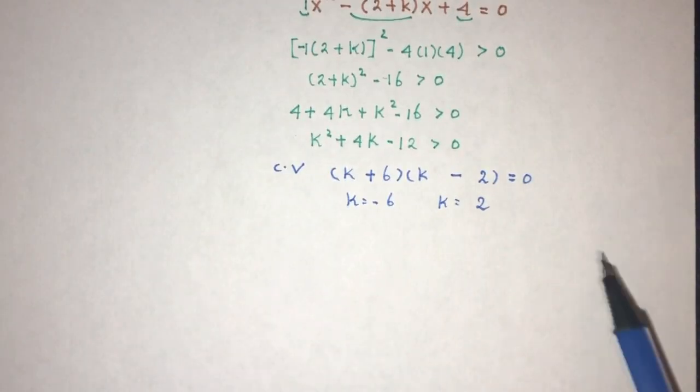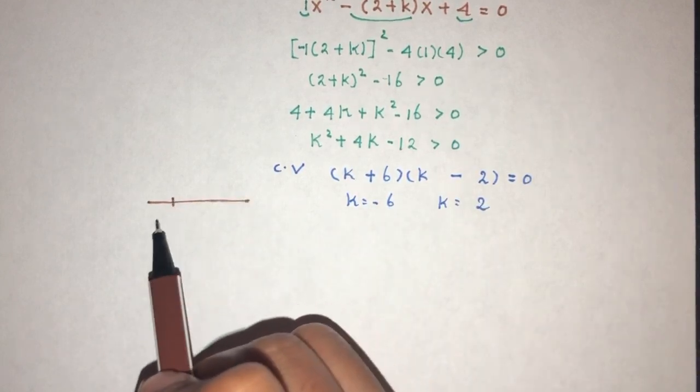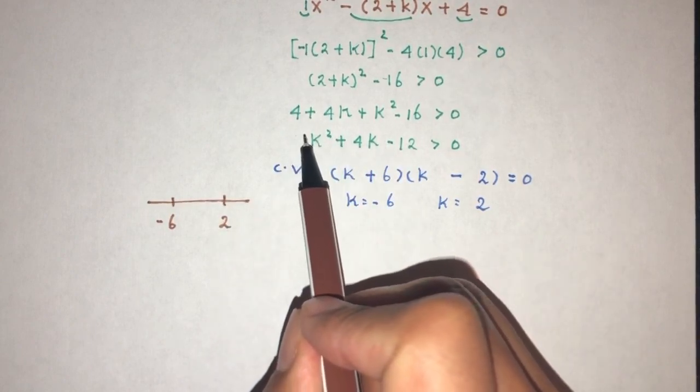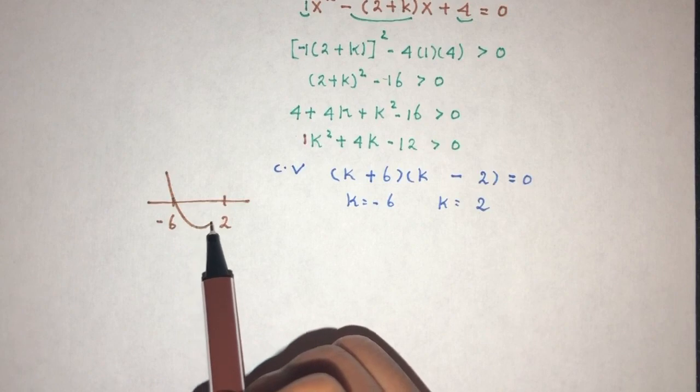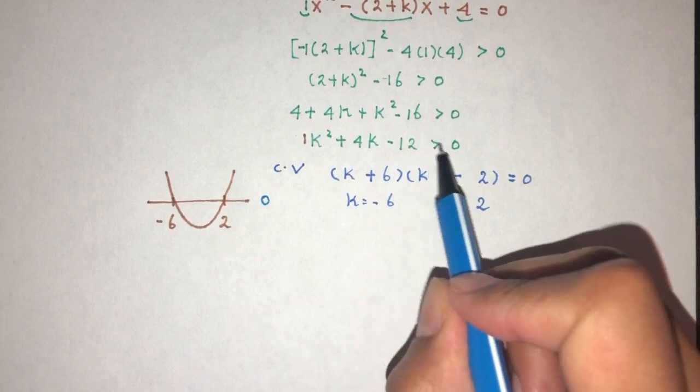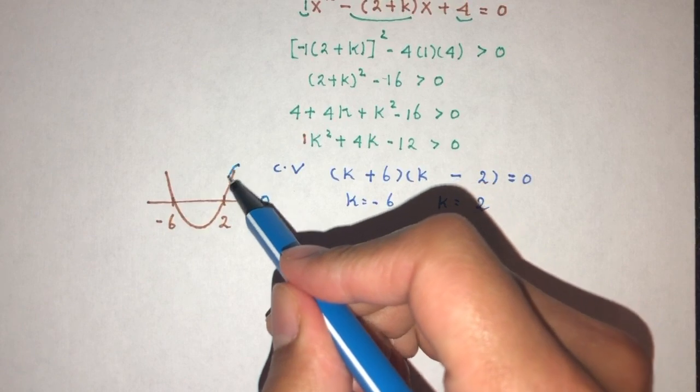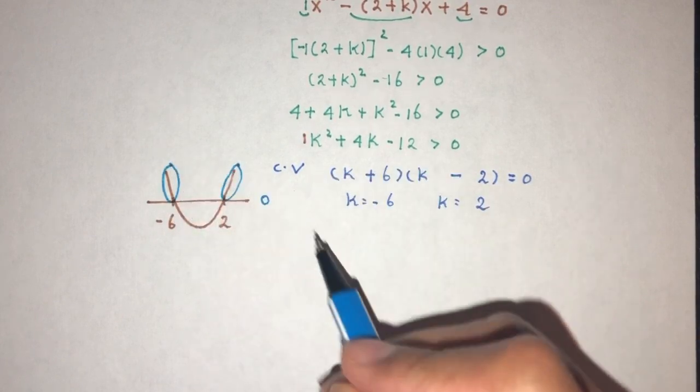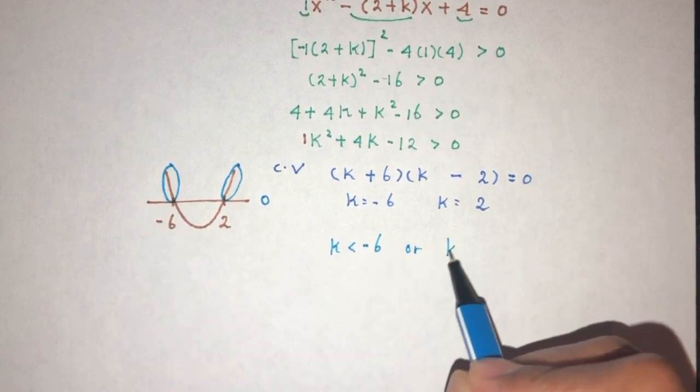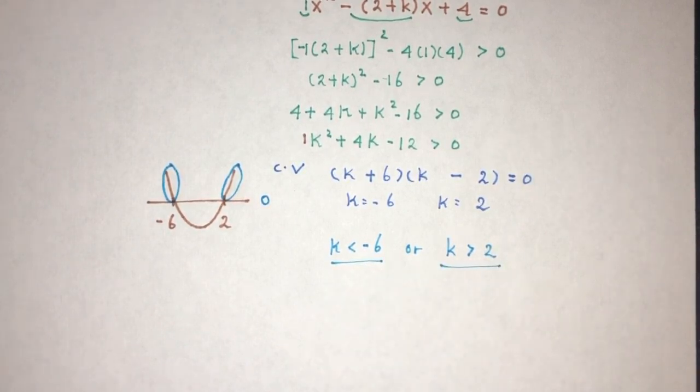Now we just have to use the graph to find the value. That will be the first value here is minus 6 and the value here will be 2. Because the coefficient here is 1, it is positive, the shape will be something like this. We have to know this. Now here we have a 0, this will be 0. We need it to be more than 0, above this line. So it will be on this side and on this side. So it means that k has to be less than minus 6 or k has to be more than 2. This will be the set of values of k for which this is true.